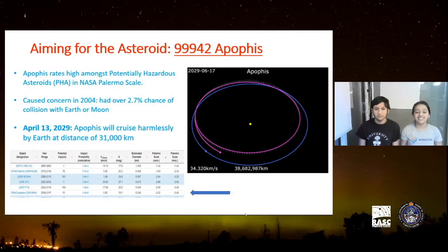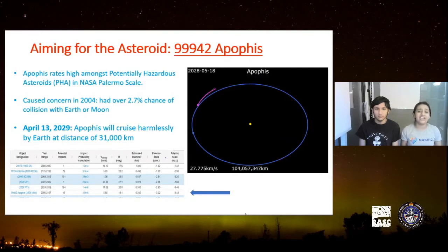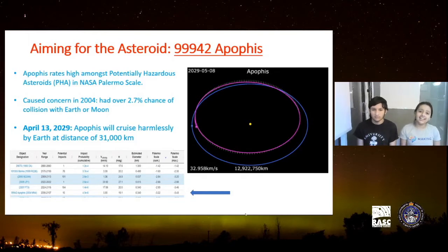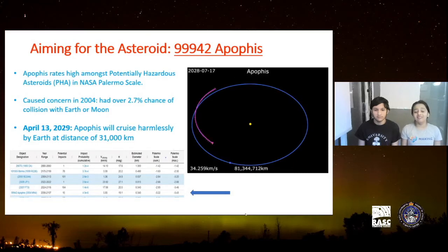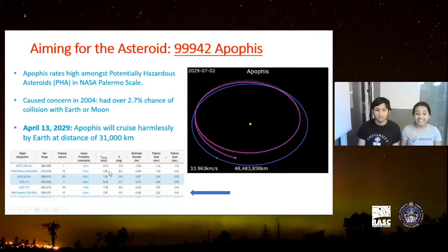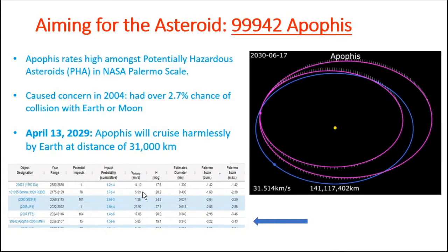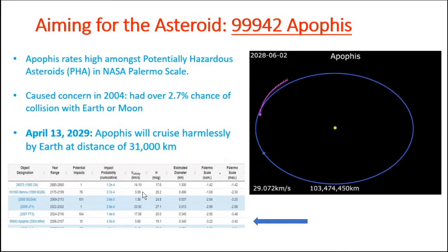I got really interested when I found this out and I wanted to learn as much about asteroids as I could. I decided to start with asteroid 99942 Apophis. Apophis is one of the potentially hazardous asteroids, PHAs. In 2004, astronomers detected over a 2.7% chance that this asteroid will intercept with the Earth or the Moon. And in 9 years from now, in 2029, Apophis will go very close to the Earth, just 21,000 kilometers — even closer than some of our satellites.